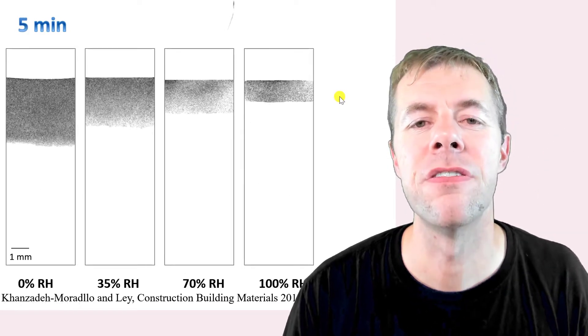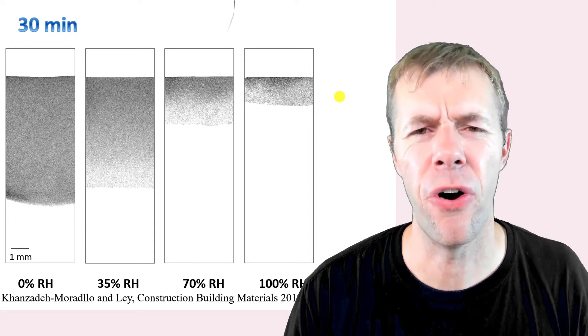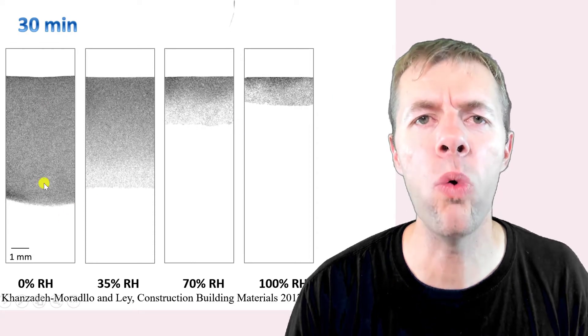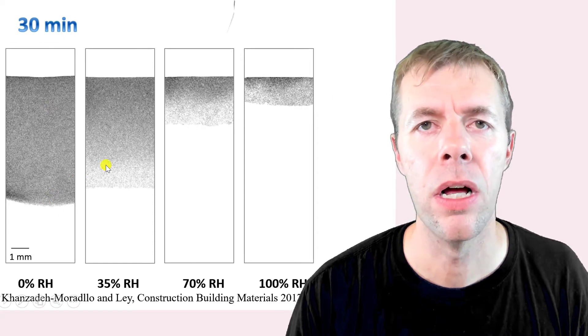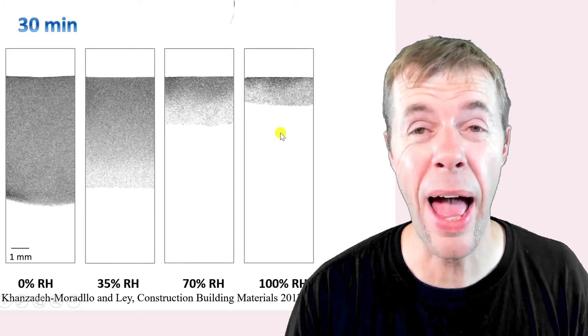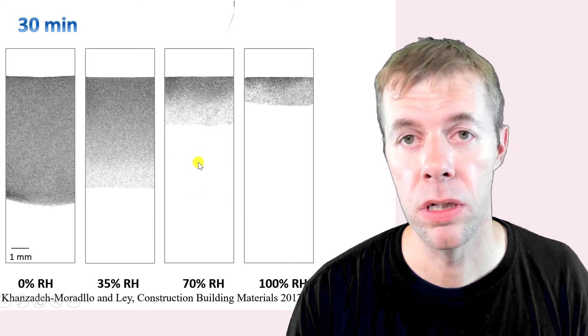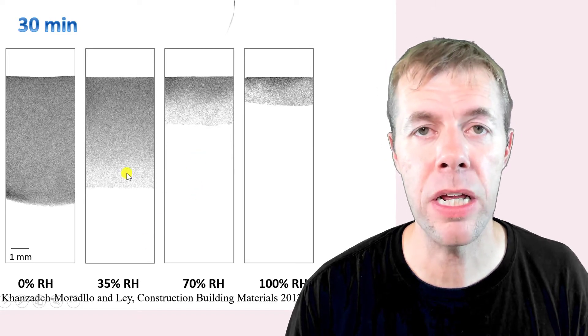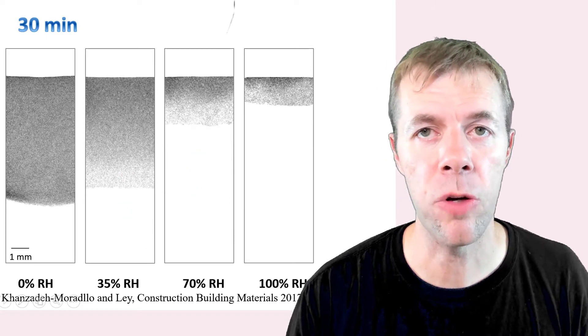But now let's go to five. 30. Whoa, look at all of it going in here. And there's less. There's less. Remember, this is the one that's wet. This is the one that was dry, and these are in the middle. 70% relative humidity, 35% relative humidity.